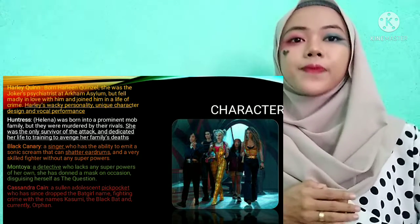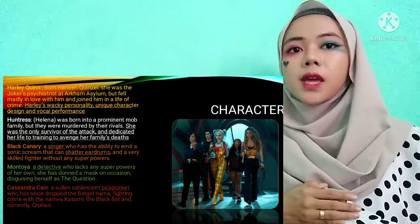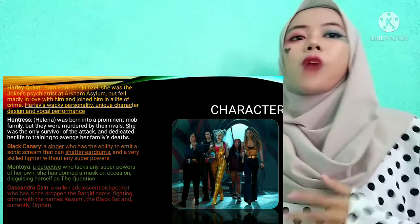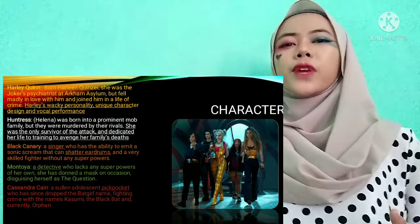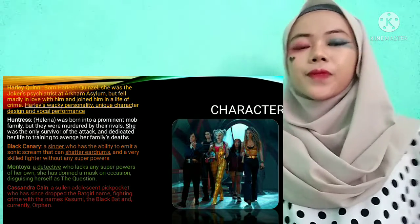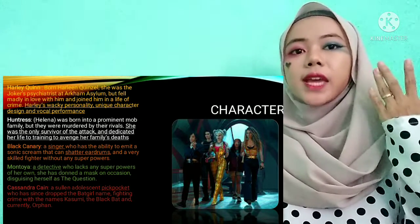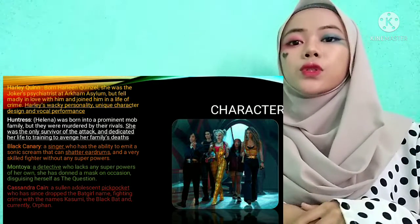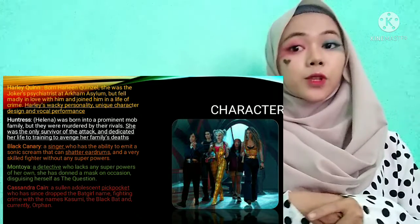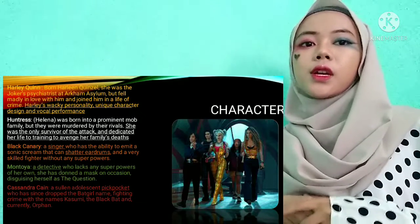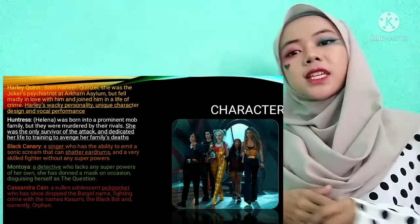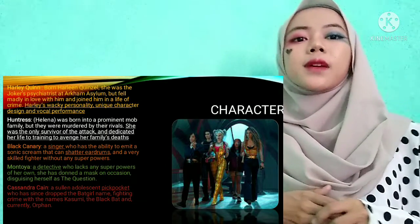Next, Huntress, or Helena — she was born into a prominent mob family, but they were murdered by rivals. She was the only survivor and dedicated her life to training to avenge her family's death. Black Canary is a singer who has the ability to emit a sonic scream that can shatter eardrums, and she is also a very skilled fighter without any superpowers. Renee Montoya is a detective who lacks superpowers. Cassandra Cain is a pickpocket who has since dropped her bad-girl ways.